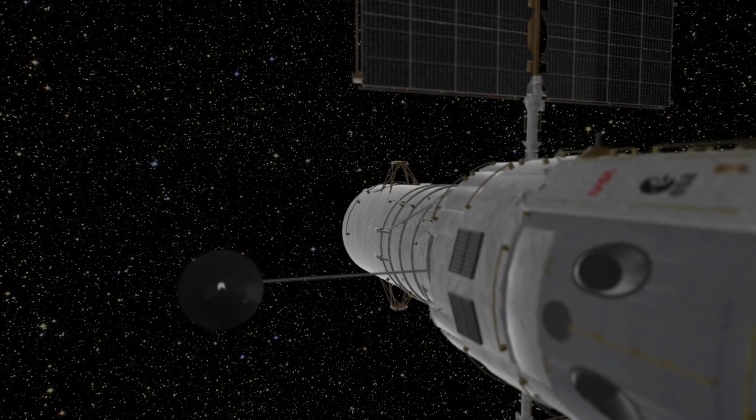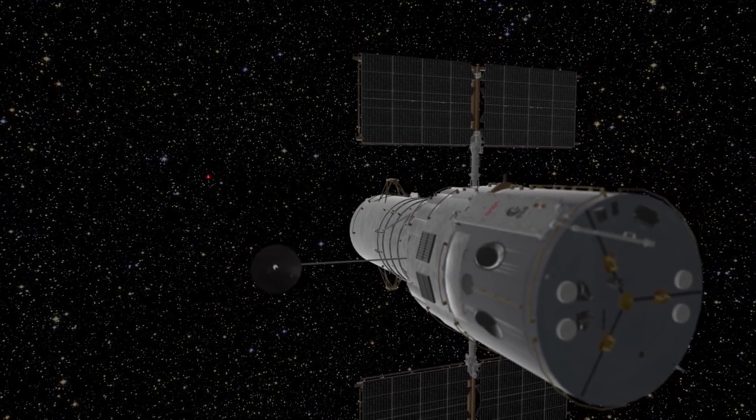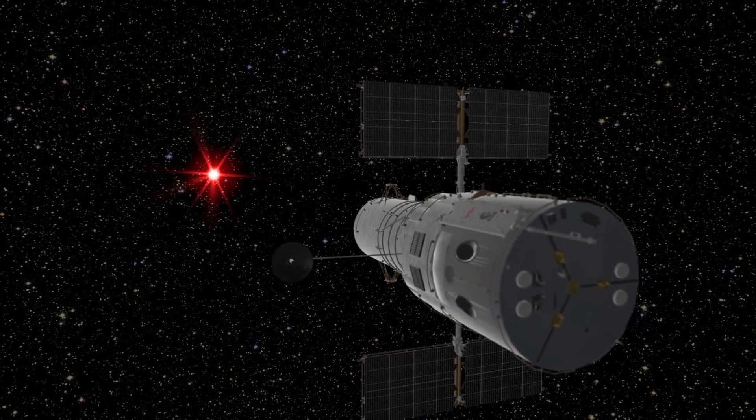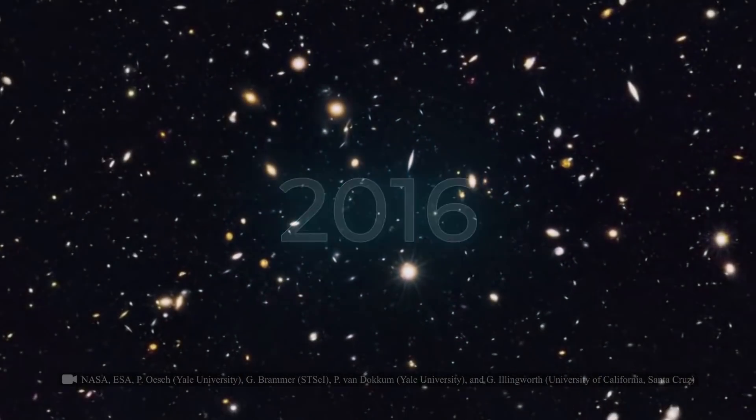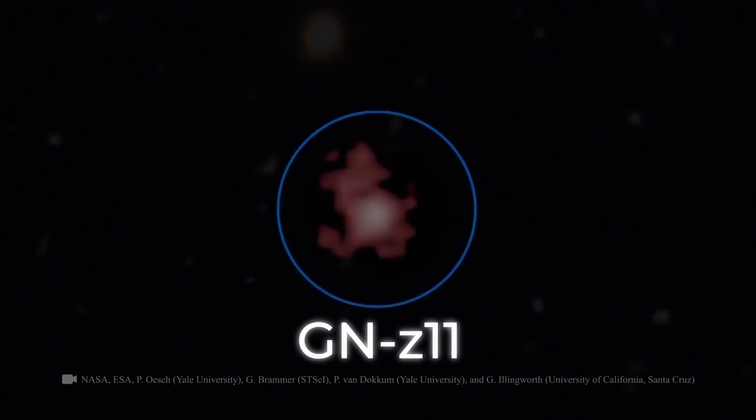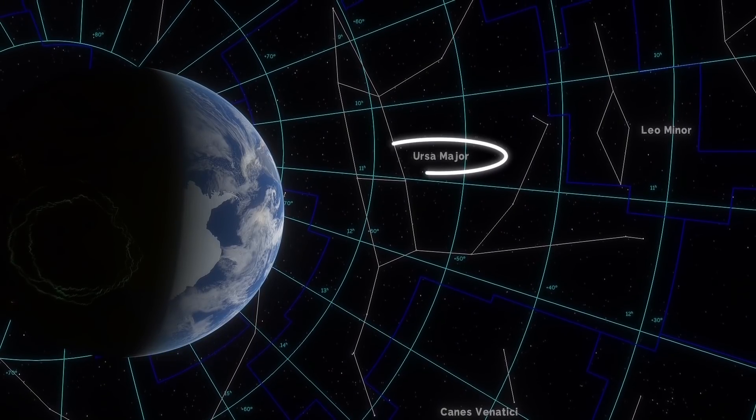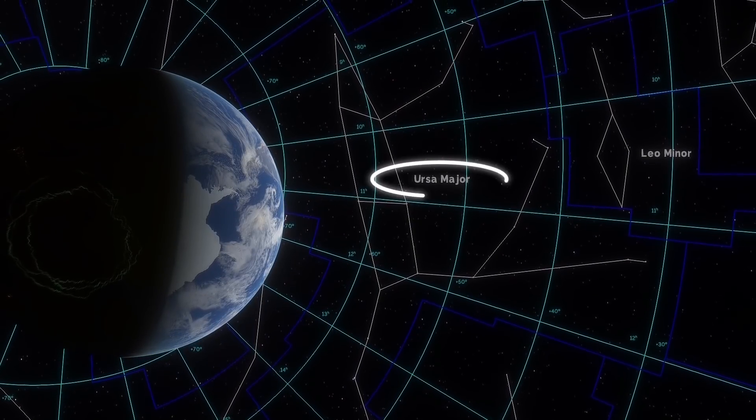One of Hubble's goals was to find the light of the farthest galaxy that humans could detect. And scientists managed to do so. In 2016, they spotted the galaxy GNZ 11. They detected and photographed it. This galaxy is located in the direction of the constellation Ursa Major.